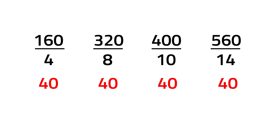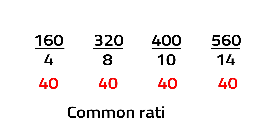This means that the data in our table has a common ratio of 40, which also means that the two quantities — distance and time of flight — show direct variation.